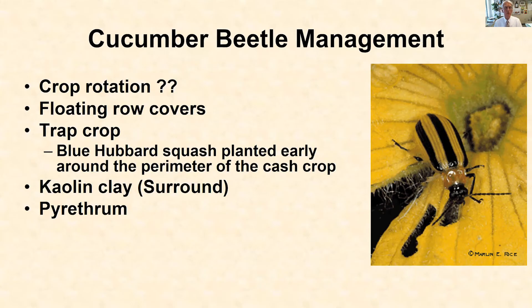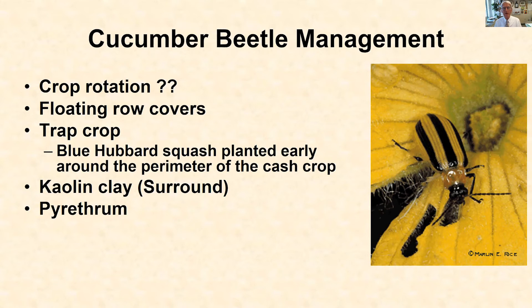One major approach in recent years has been to use floating row covers — fabrics on hoops suspended above the plants to keep the beetles from feeding. The day you put out the transplants, you put wire hoops in the ground, stretch the fabric over them, and embed or weigh down the edges with bags of sand or rocks to hold it against the wind. That screening protects cucumber and melon plants from those first cucumber beetles. Eventually, row covers have to come off so pollination can occur.